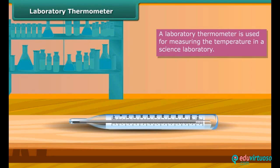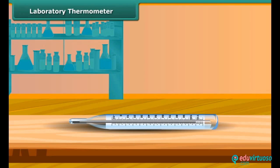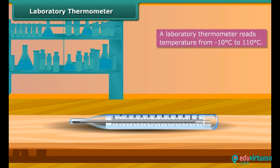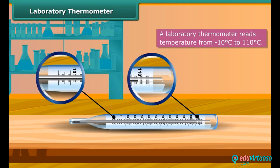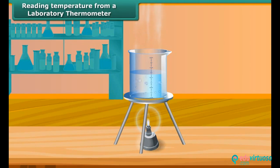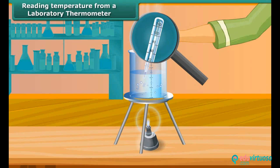A laboratory thermometer is used for measuring temperature in a science laboratory. It is similar to a clinical thermometer but is long and narrow. A laboratory thermometer reads temperature from -10°C to 110°C. To measure the temperature of hot water in a beaker, immerse the bulb of the thermometer in the hot water. Watch the shining thread of mercury moving up in the thermometer tube. After some time, the mercury thread will stop rising. Read the temperature on the thermometer tube which corresponds to the top of the mercury thread — this is the temperature of the hot water.